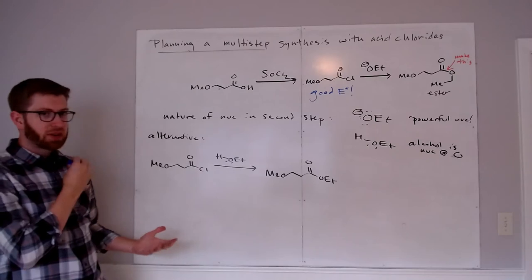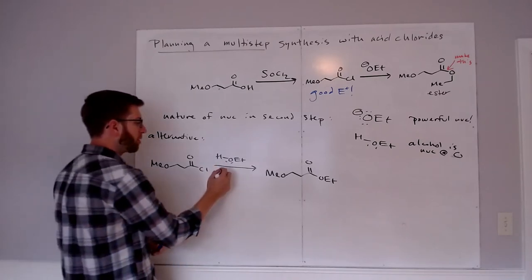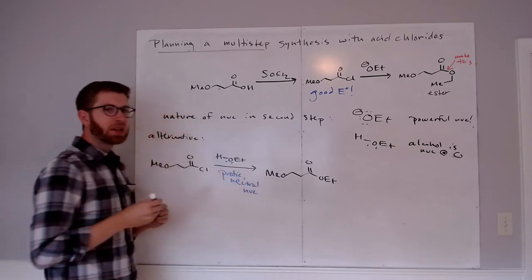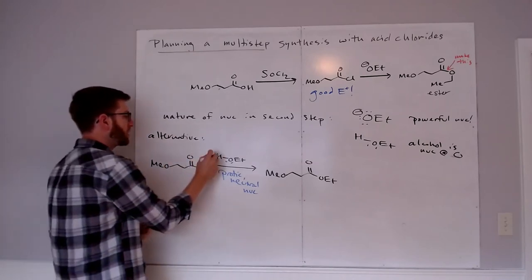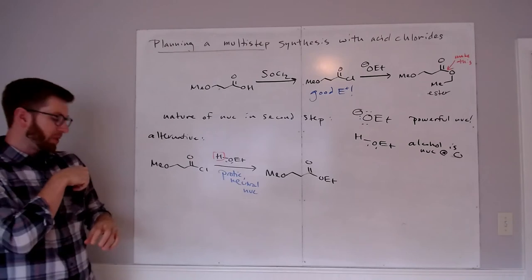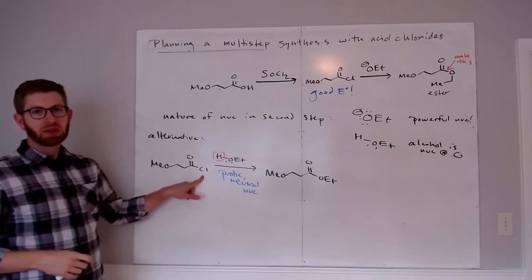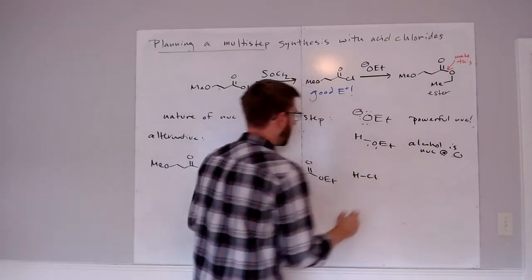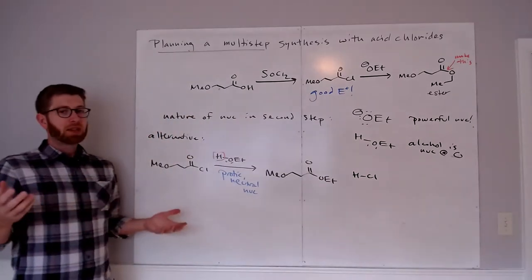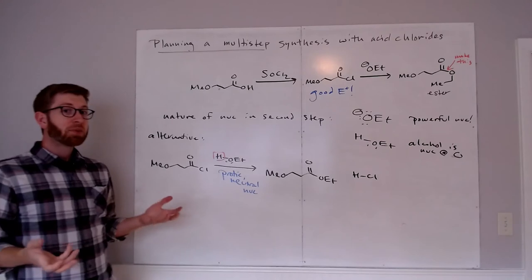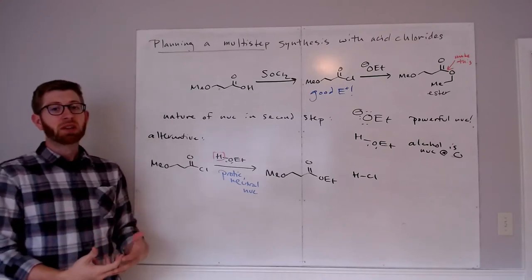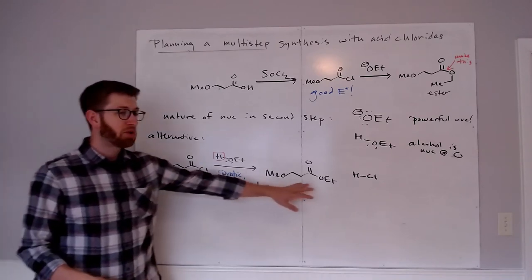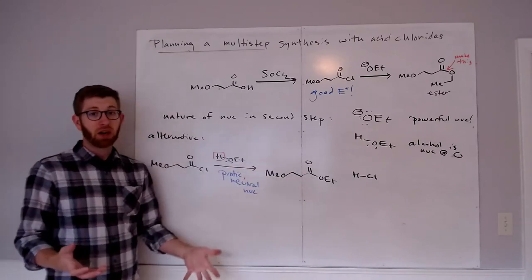But there's one thing I do notice here we haven't talked about yet, and that's that this alcohol is a protic neutral nucleophile. And that tells me something about what's going to happen to this hydrogen. Specifically, it's going to end up getting transferred to the leaving group, which is Cl. So it sounds to me like the other product in this SNAC reaction is actually going to be HCl, which, maybe that's not a problem except from a safety perspective. Your mixture is going to become extremely acidic as the reaction goes forward.